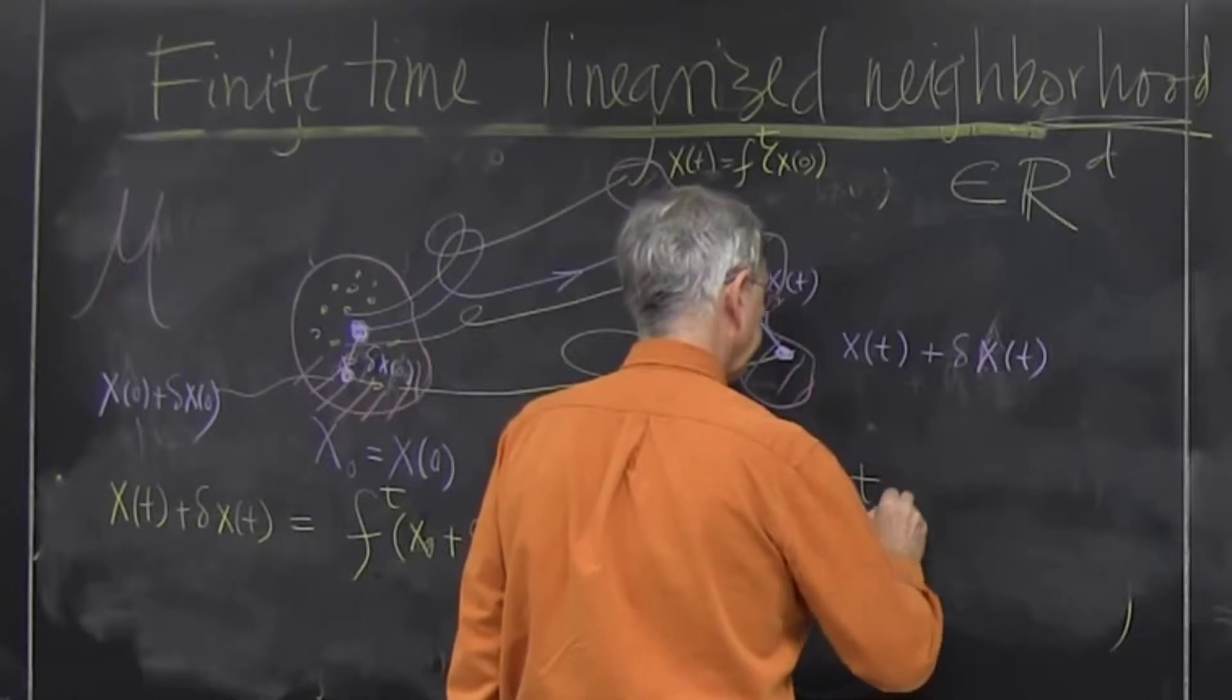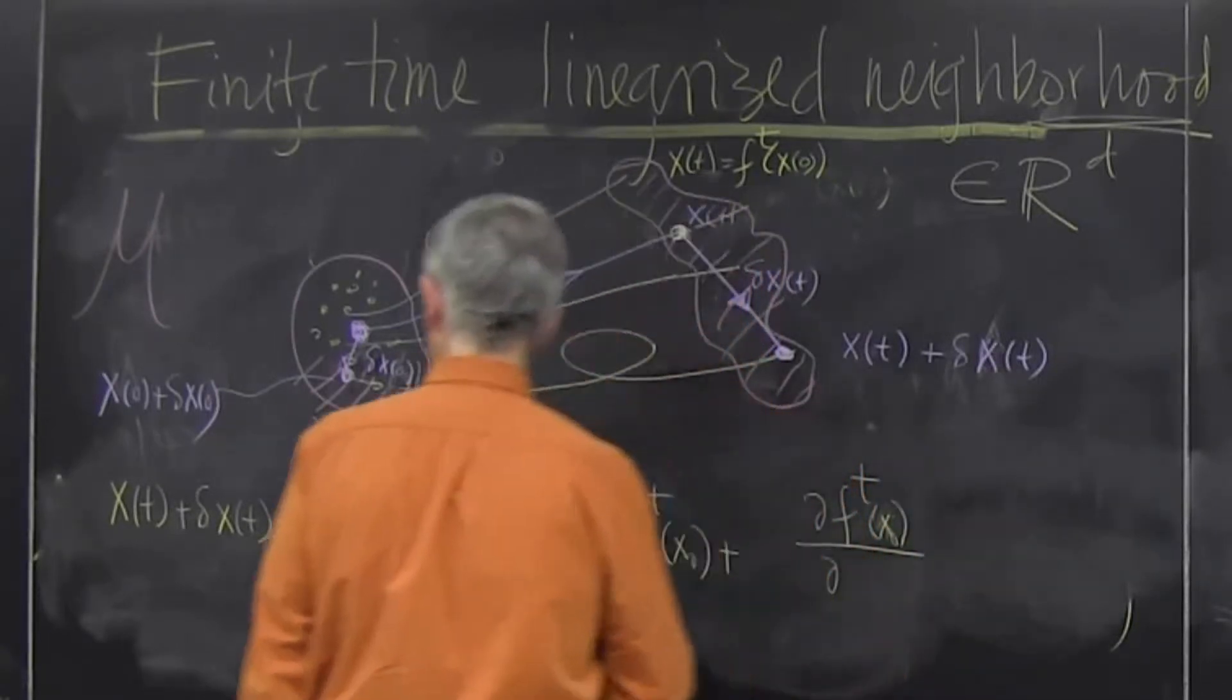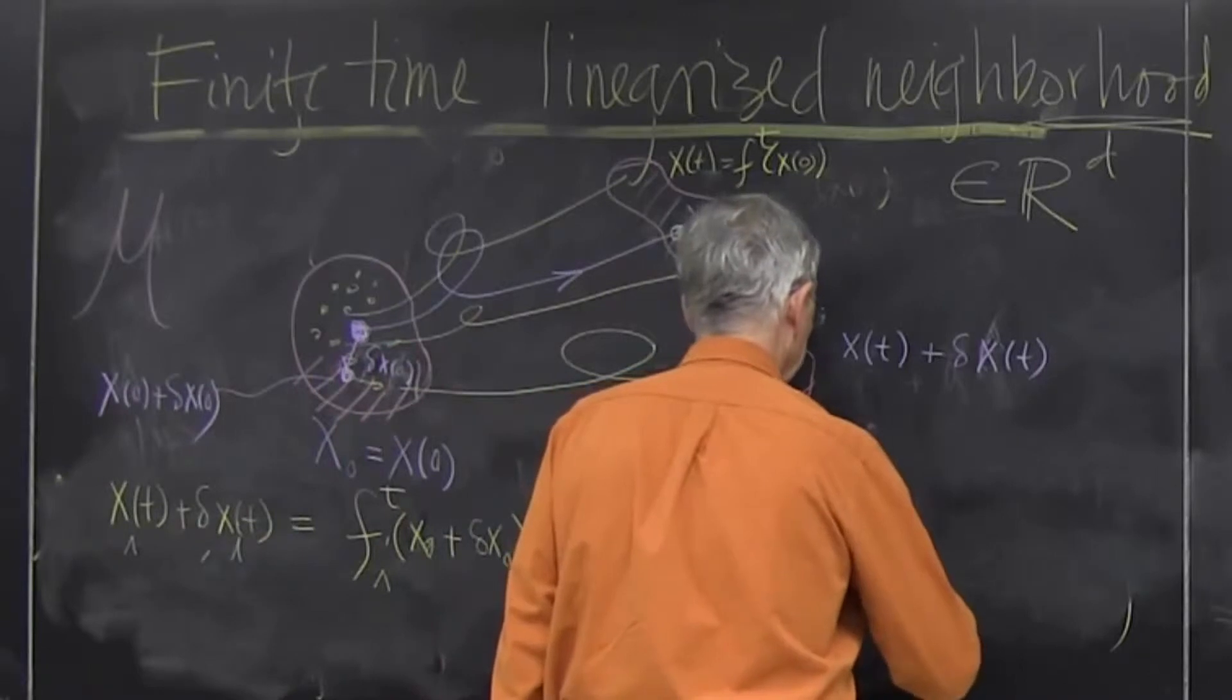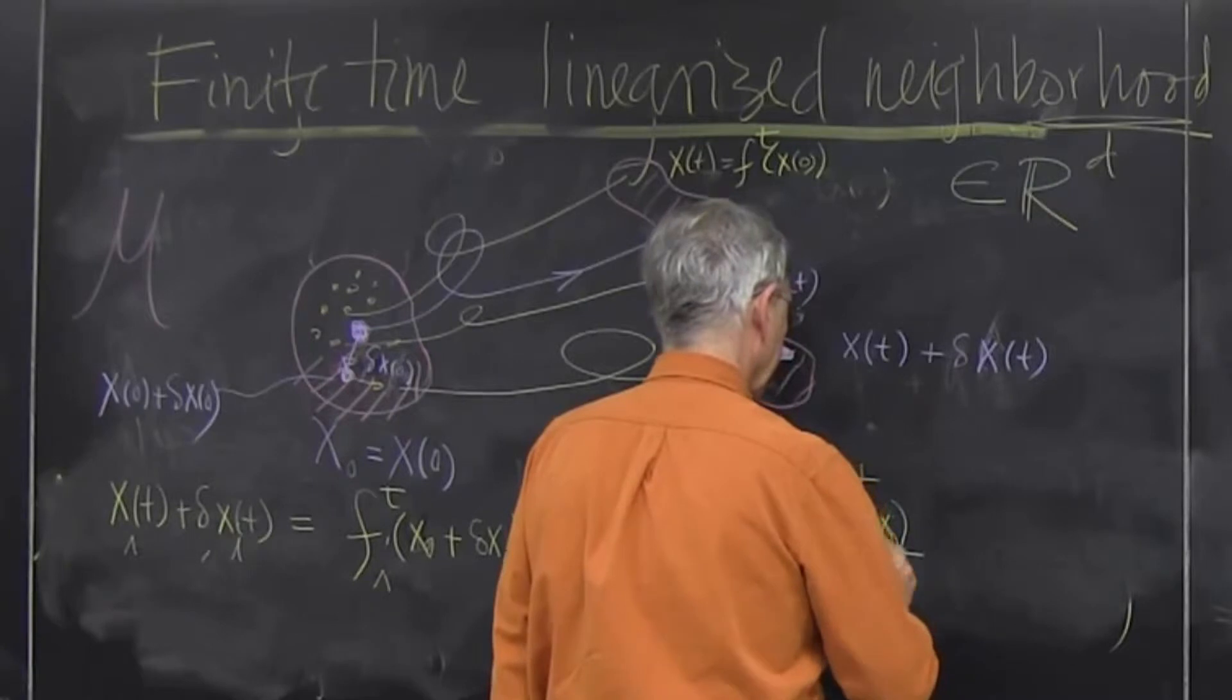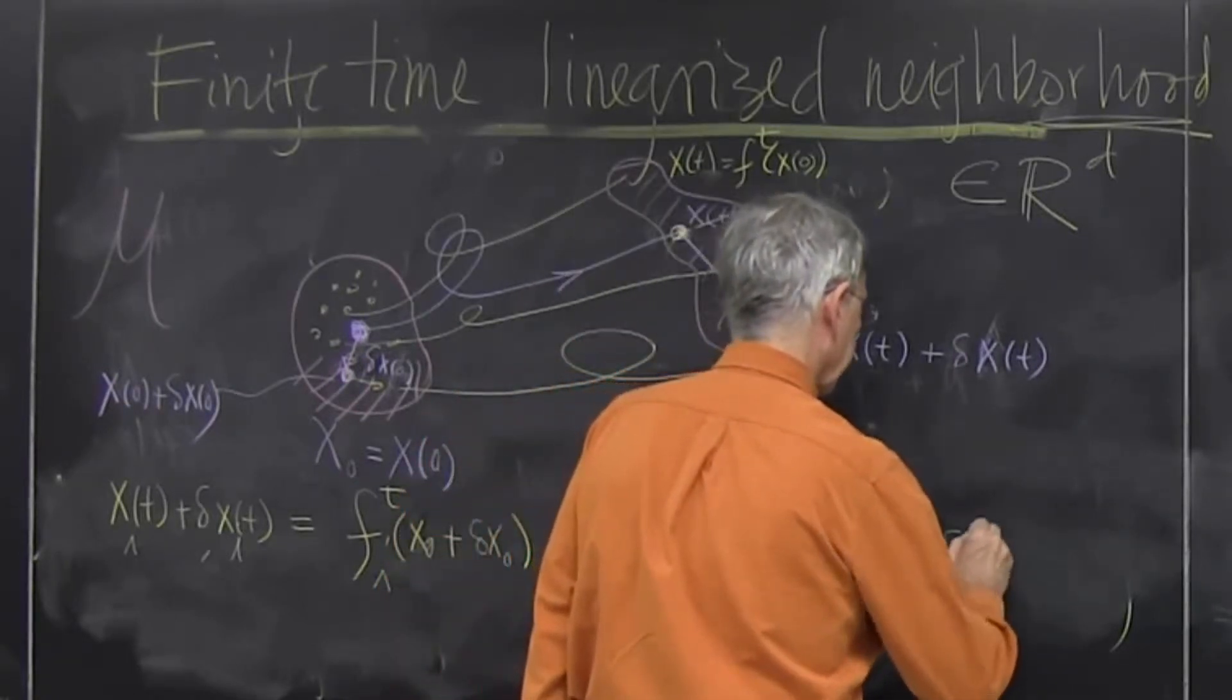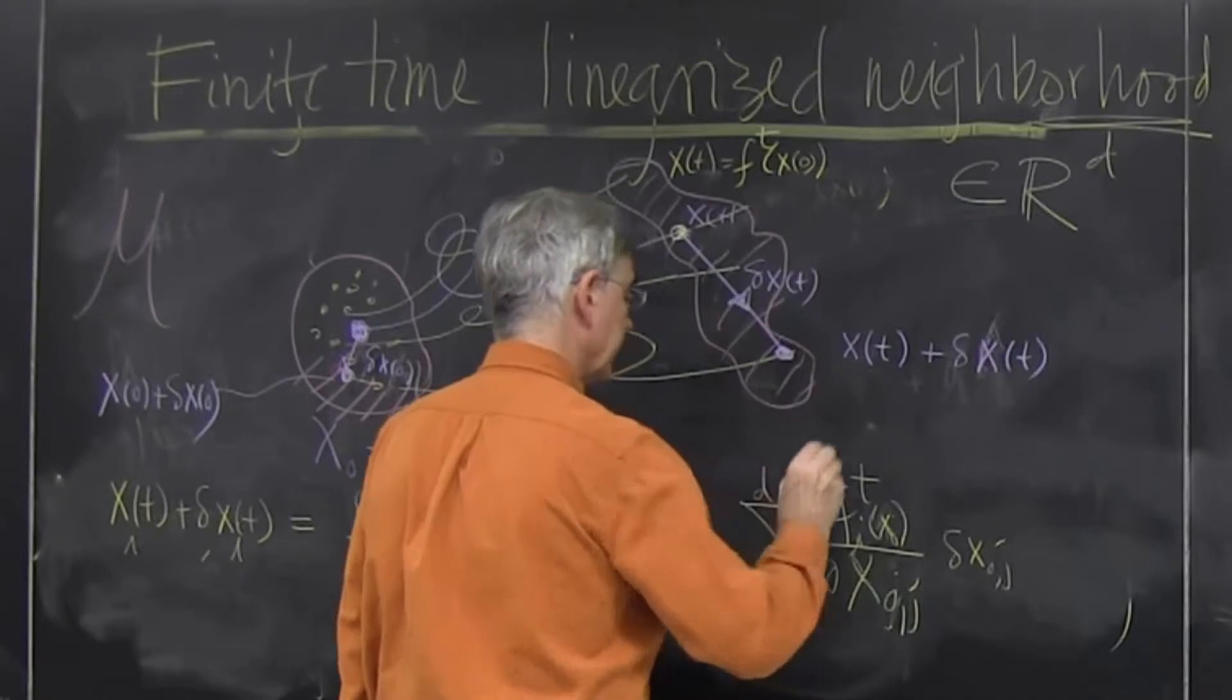Time forward map starting on this point. So the i-th component of the vector, this changes with respect to j-th component of the vector times the initial displacement, 0, j-th component summed over j equals 1 to d of all dimensions.